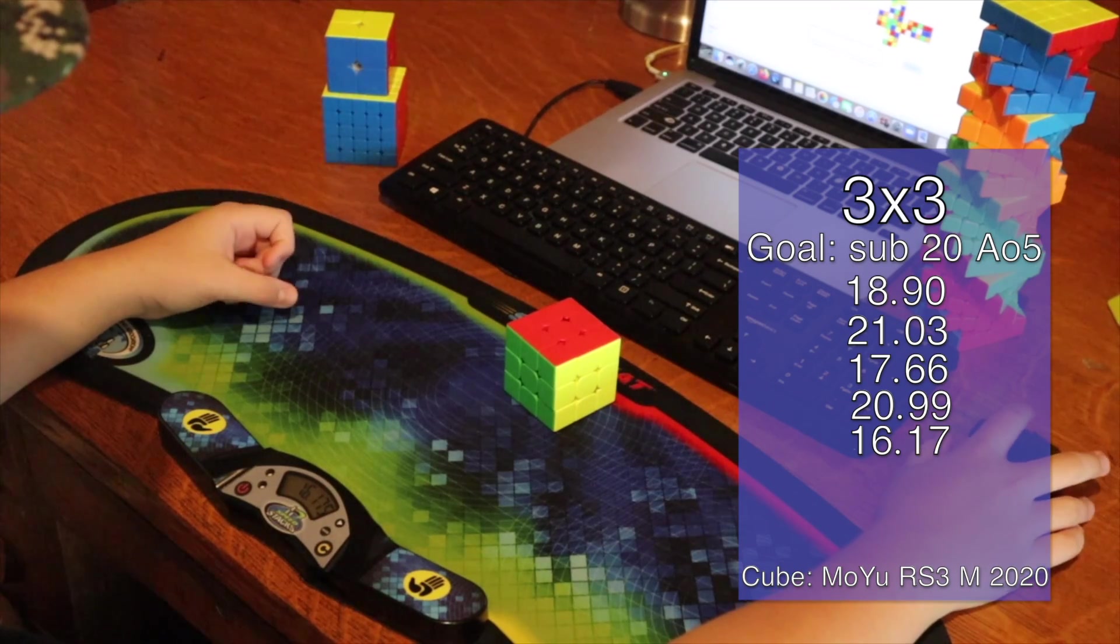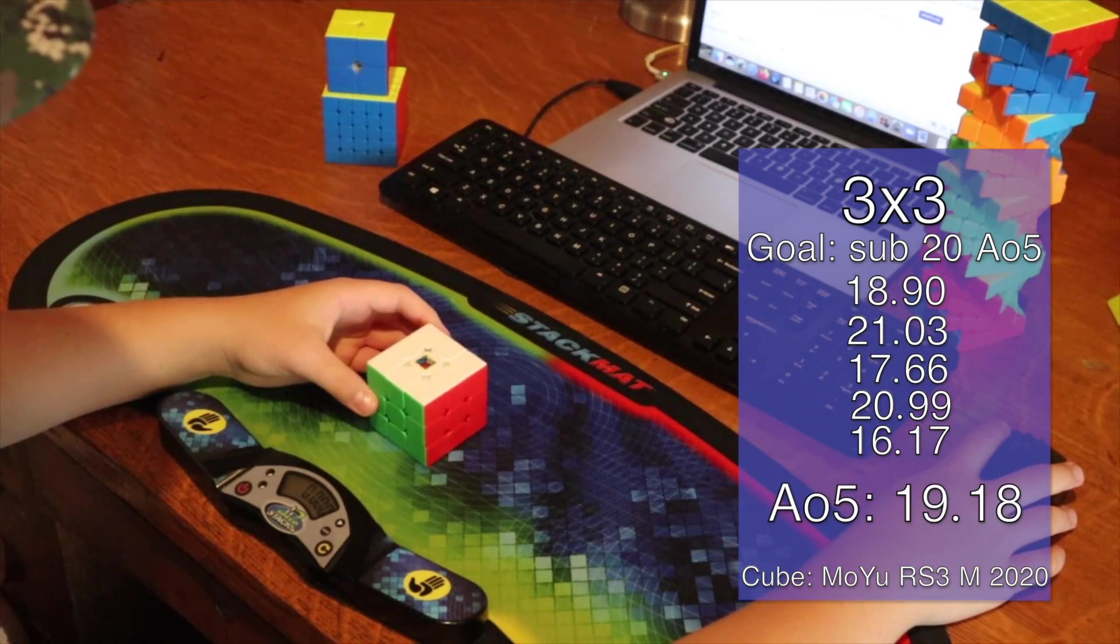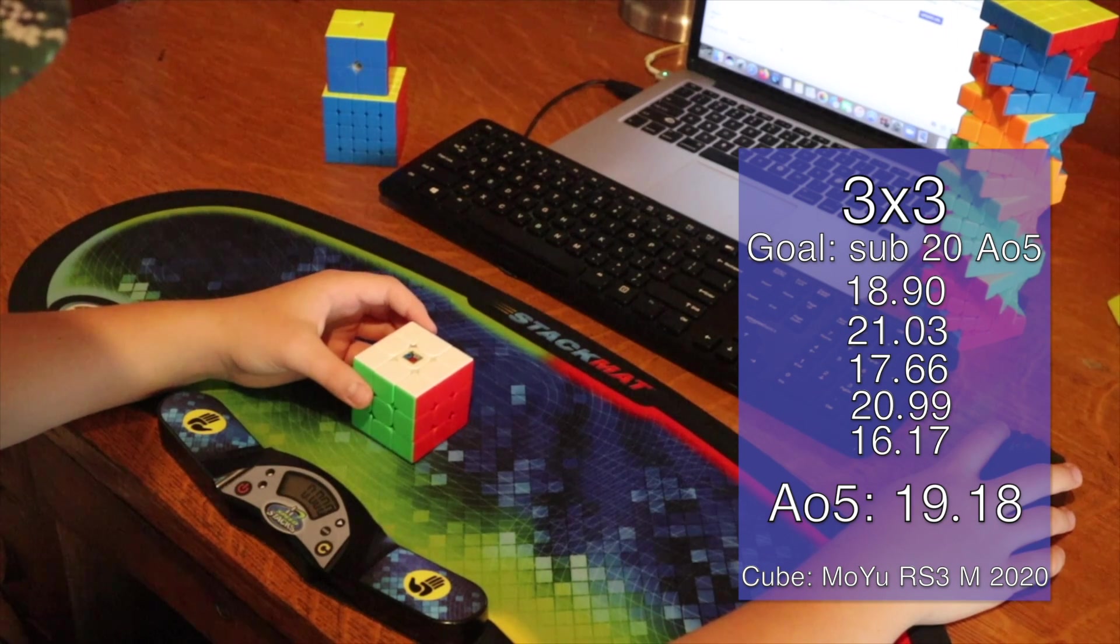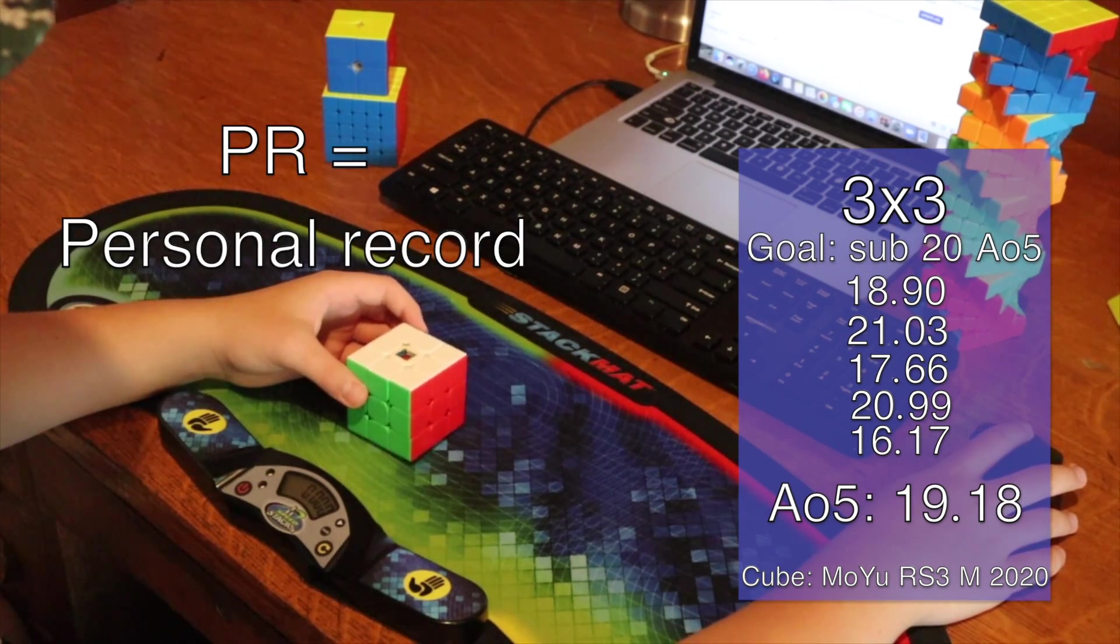I think this is going to be a sub 20 average, so that's pretty nice. It was a 19.18 average of 5, which is 8 hundredths away from my PR average of 5.